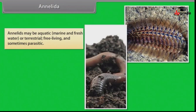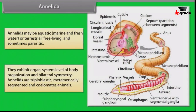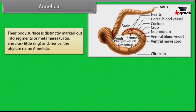Annelida: Annelids may be aquatic — that is marine and freshwater — or terrestrial, free-living and sometimes parasitic. They exhibit organ system level of body organization and bilateral symmetry. Annelids are triploblastic, metamerically segmented and coelomate animals. Their body surface is distinctly marked out into segments or metameres, from the Latin word 'annulus' meaning little ring, hence the phylum name Annelida.